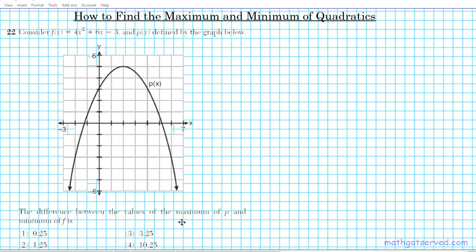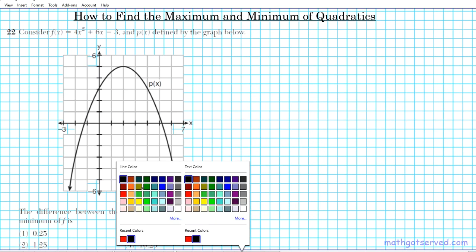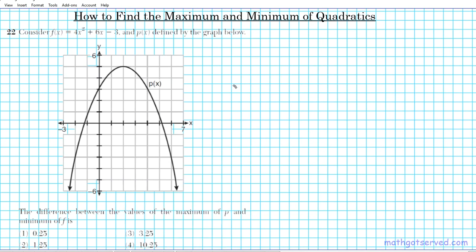The question asks: the difference between the values of the maximum of P and the minimum of F is. So what we're looking for in this problem, we're basically trying to find the difference between P max and F min. So we're just looking for P max minus F min.